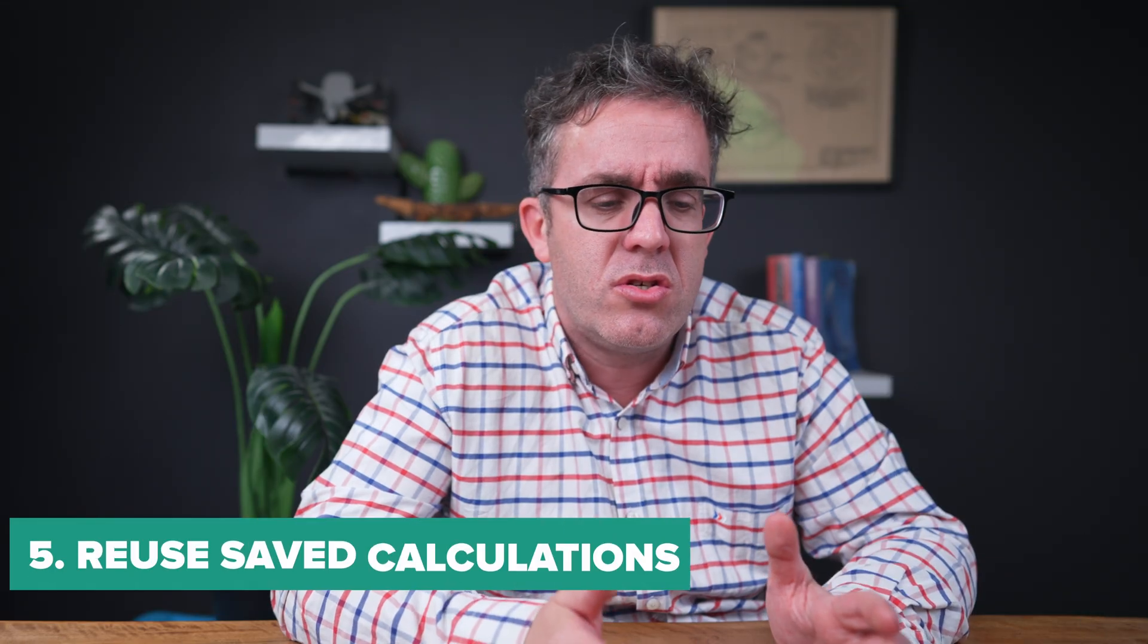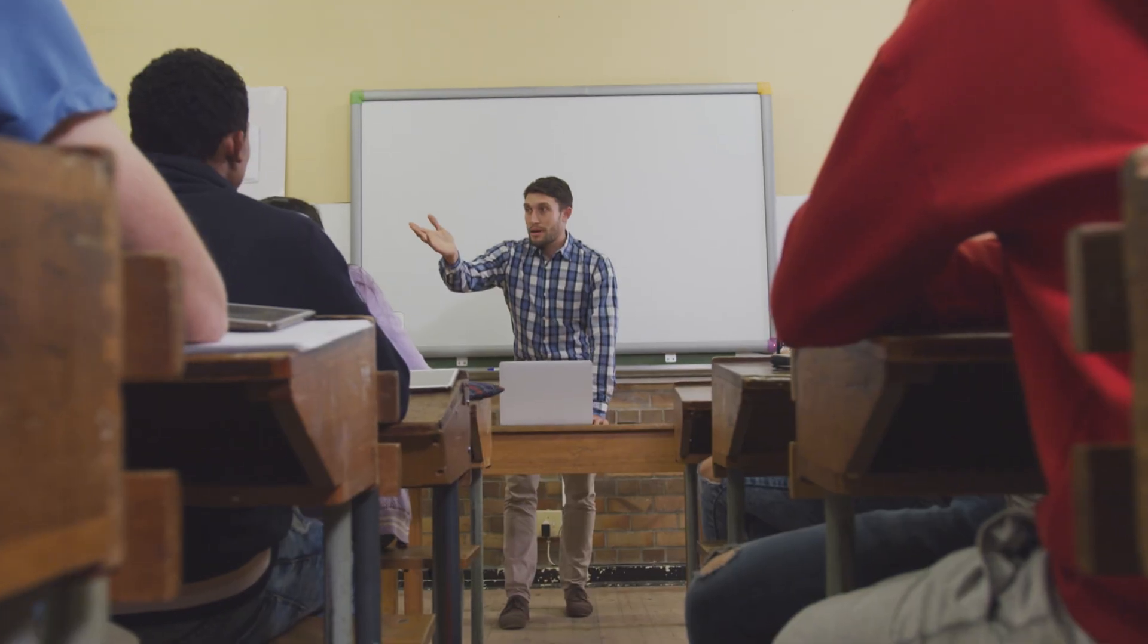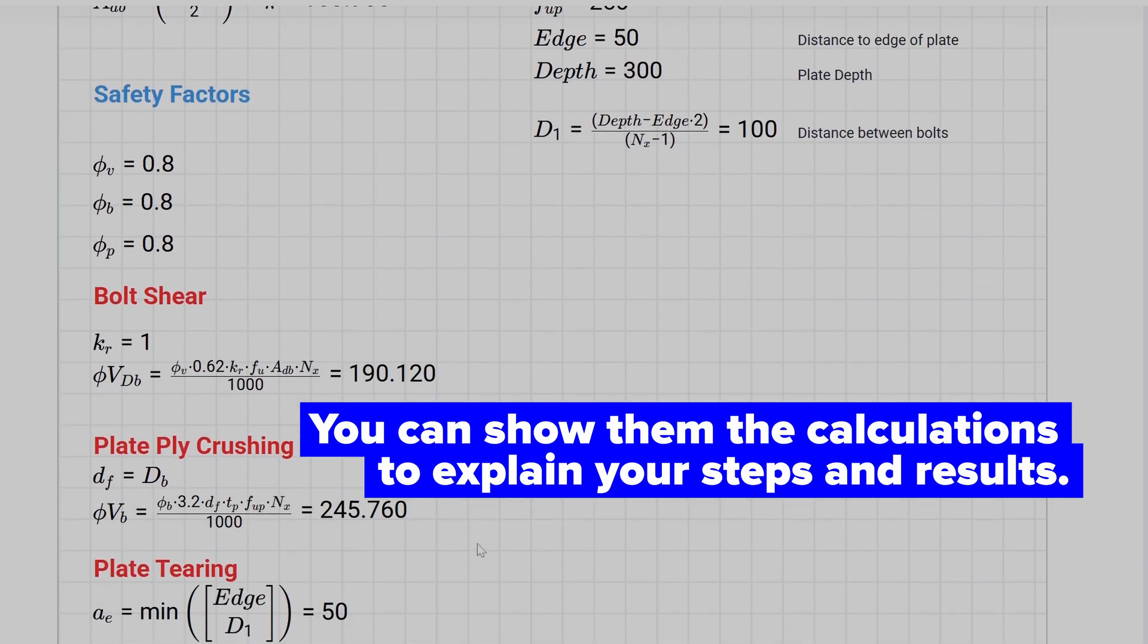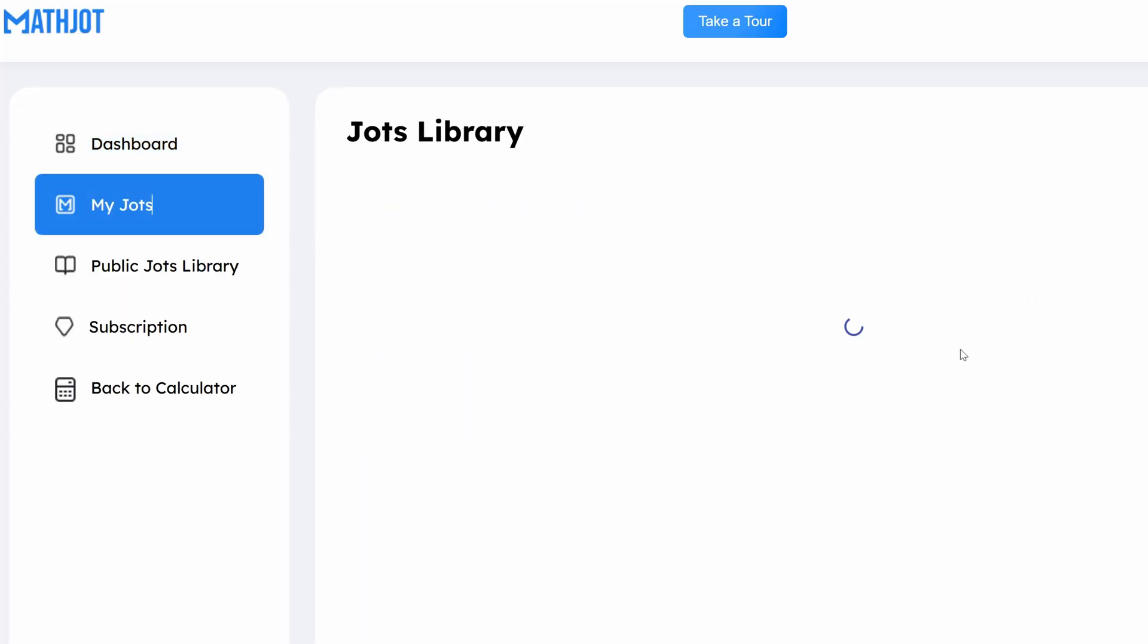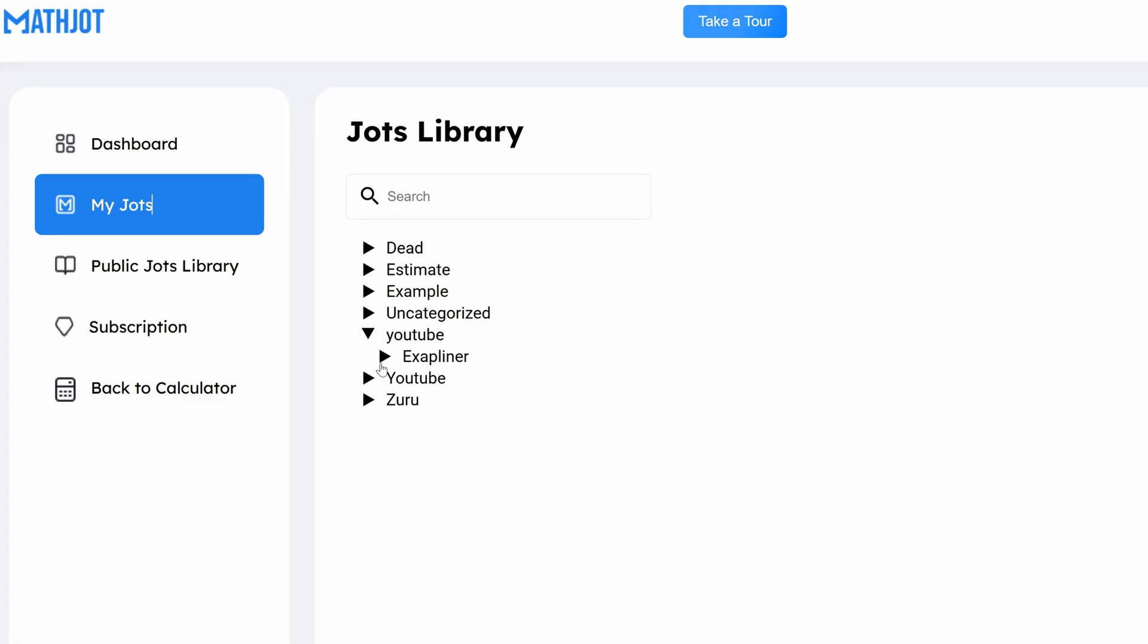It also allows you to reuse those calculations over and over again. Or just say you need to explain to a graduate about how something works. You can give them these calculations that they can see why you've done certain things and how the answers have gotten out to the correct response. So I have a series of save jots that I use all the time. We'll just say we need to do a worked example. We're doing lots of different country worked examples at the moment. I'll go through the US code. I'll go through the Australian code and I'll go through the Euro code as individual standalone pages.